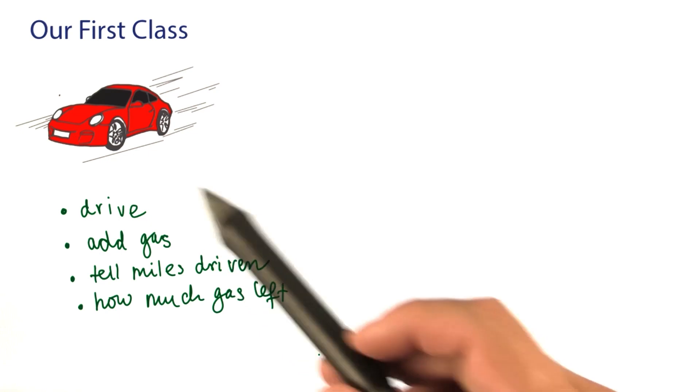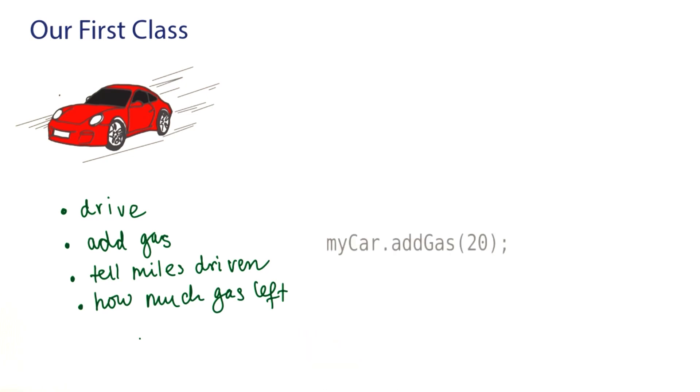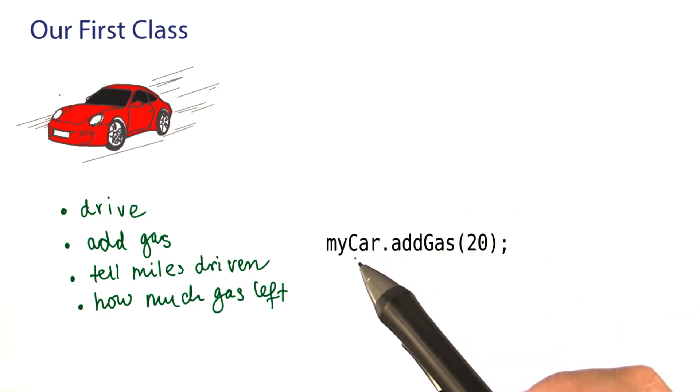Now, the first step is to take this English description of the car's capabilities and turn it into the Java code for the public interface. Here is how I like to do it. I first imagined myself being a user of this class. So, I'd have an object. Here's my car.